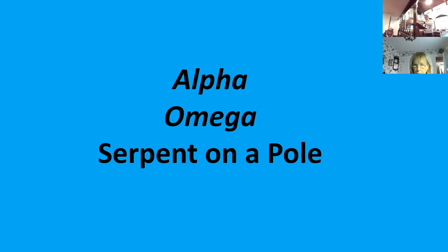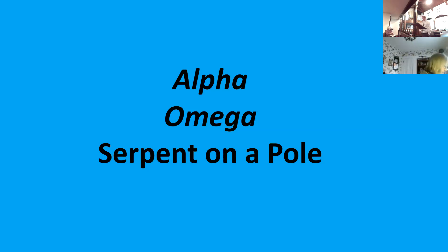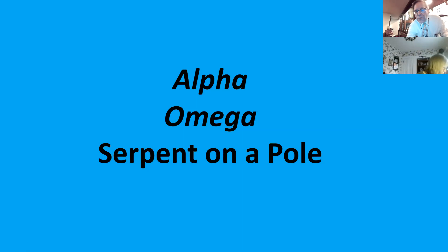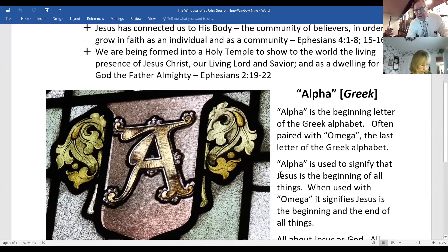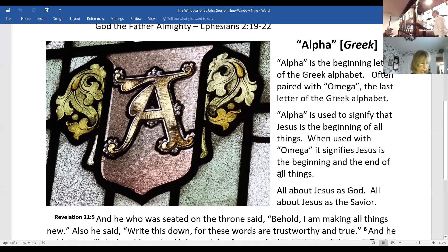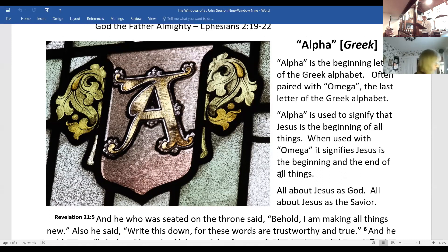As we make our beginning, we're on window number 9, which looks like an A — it's over there in the corner. What we're looking at here is the Greek letter alpha, which is the beginning letter of the Greek alphabet. This is often paired with omega, which is the last letter of the Greek alphabet, and omega is actually on the back of this sheet.